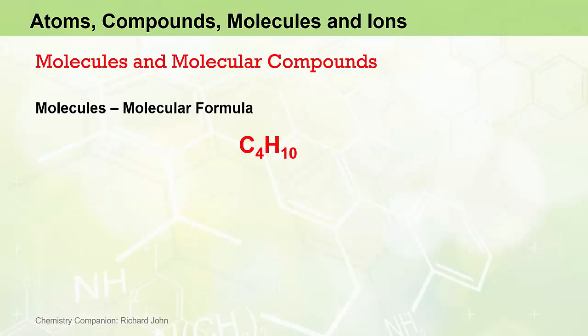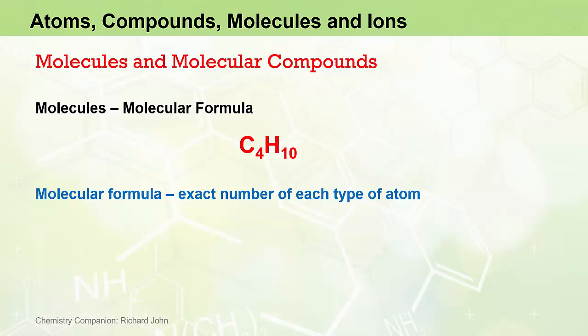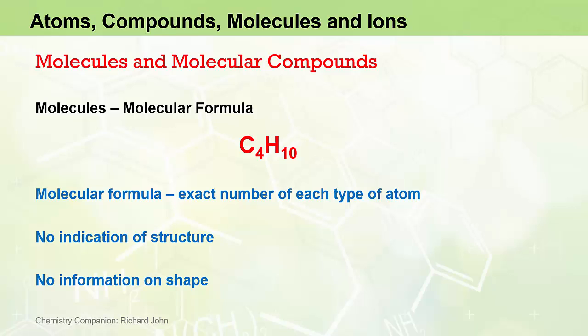We will use the formula C4H10 to demonstrate the differences and importance of each. As shown here, C4H10 is a molecular formula which gives the exact number of different atoms of an element in a molecule. While this is very useful, it is also somewhat limited as it does not give us any indication on the structure or the order of attachment of atoms, and it gives us no information about the shape of the molecule.